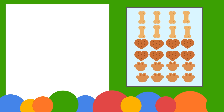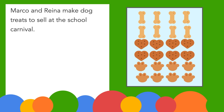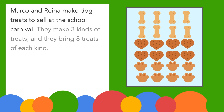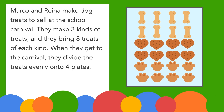Our first problem says: Marco and Reina make dog treats to sell at the school carnival. They make three kinds of treats, and they bring eight treats of each kind. When they get to the carnival, they divide the treats evenly onto four plates. How many treats are on each plate?